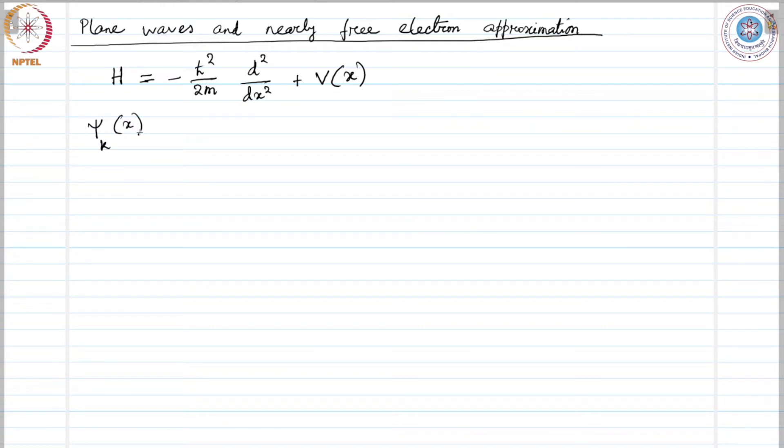So, the plane waves are given by w index k n equals 1 over the normalization constant e power i k plus h n times x where l is the length of the crystal, one dimensional crystal.